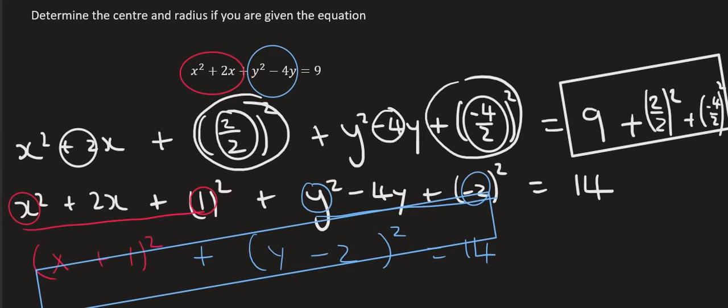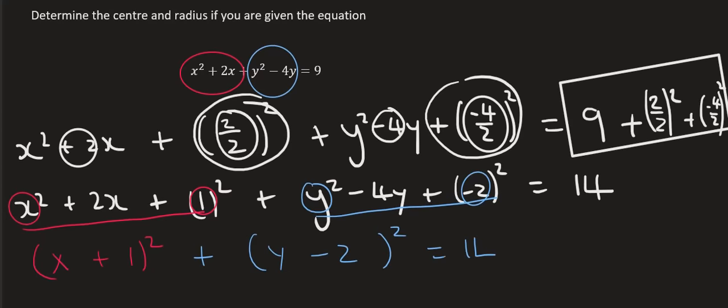So the center is going to be minus 1 and positive 2. The radius is not going to be 14 — it's going to be the square root of 14.